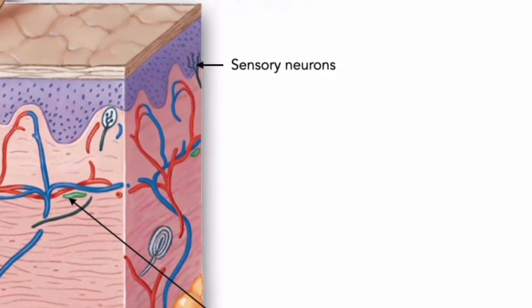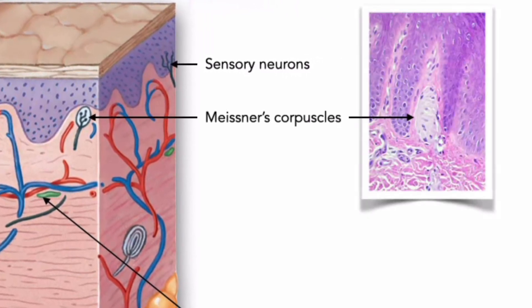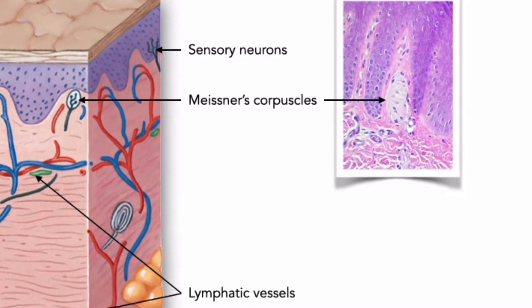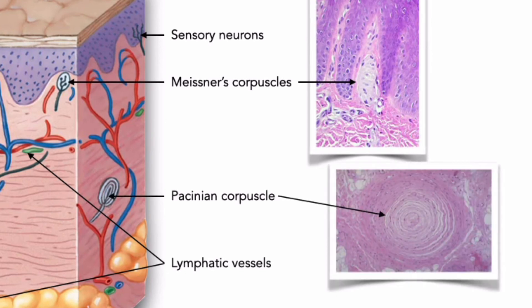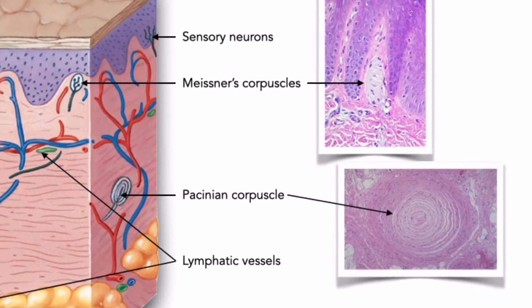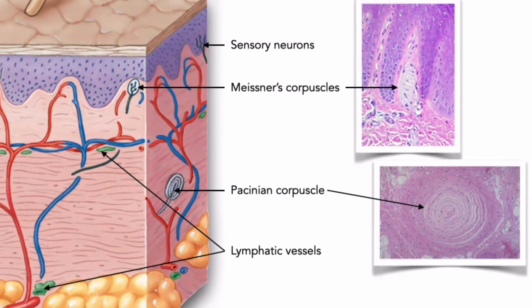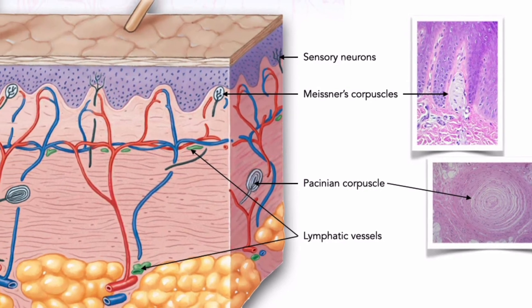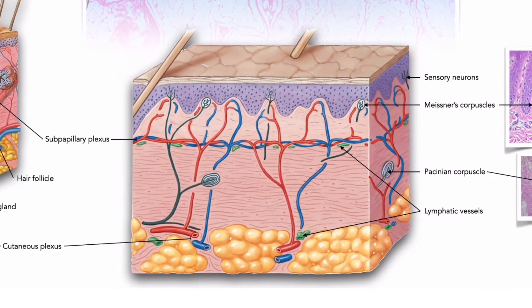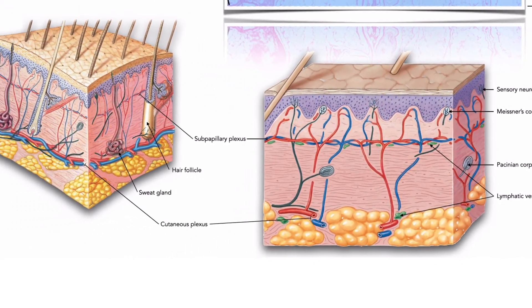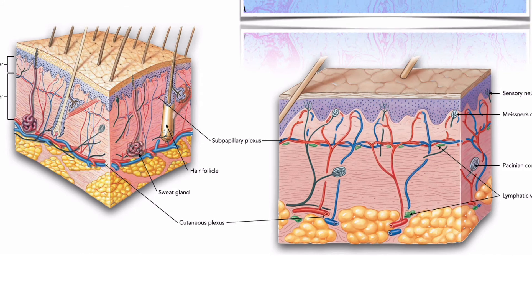Examples include receptors sensitive to light touch, namely tactile Meissner's corpuscles, located in the dermal papillary layer, and receptors sensitive to deep pressure and vibration, namely lamellated Pacinian corpuscles, in the reticular layer of the dermis. Thus, the integument is a sensory structure. Beyond monitoring sensory receptors, the nerve fibers found in the integument also control blood flow and adjust gland secretion rates.